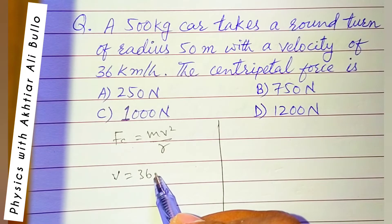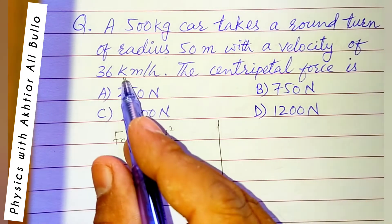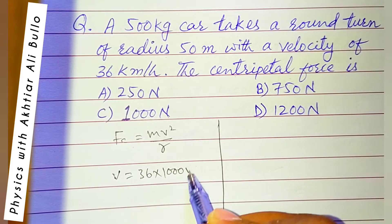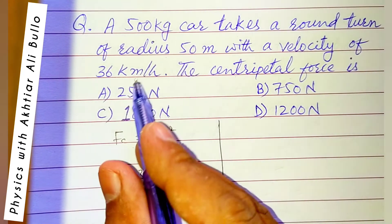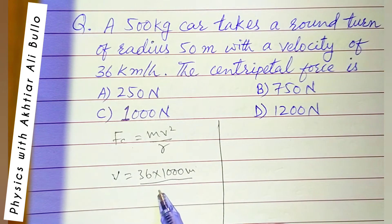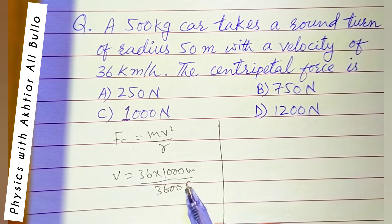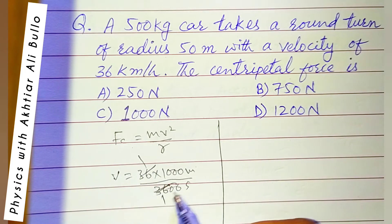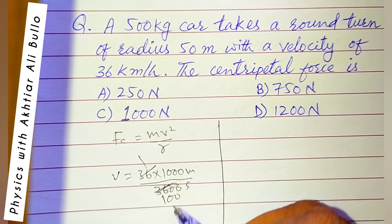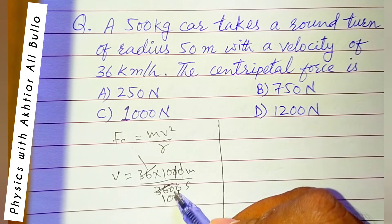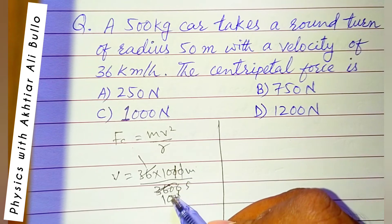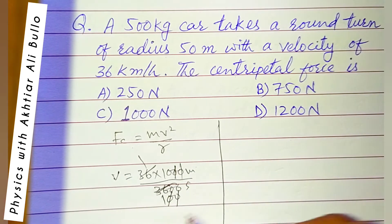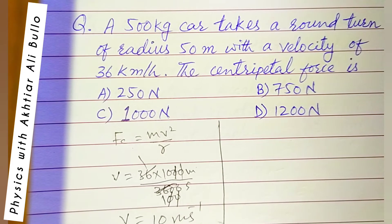So 36 km/h: 1 kilometer equals 1000 meters, and 1 hour equals 3600 seconds. The 36 in the numerator and denominator cancel, and the zeros cancel as well, so V is obtained as 10 meters per second.